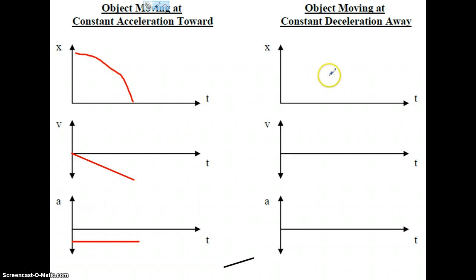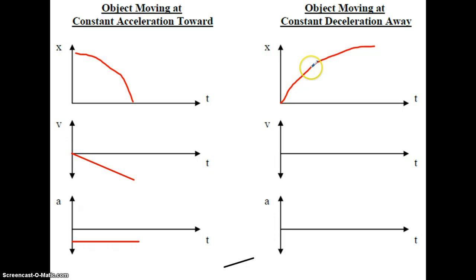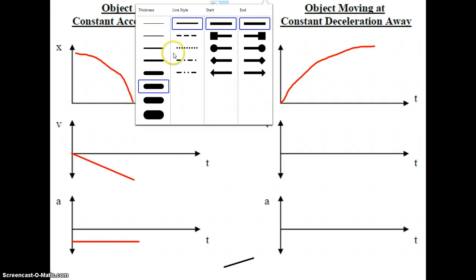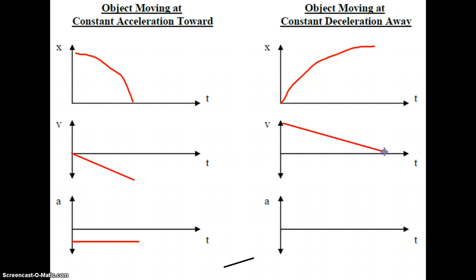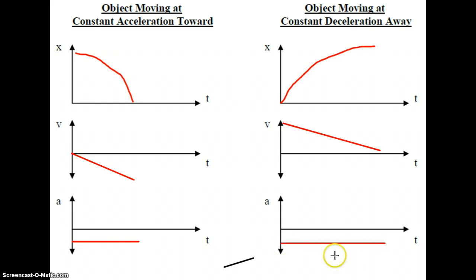Shifting to constant deceleration away: this object is slowing down but the X numbers are getting bigger. This results in a curve where tangent line slopes would be decreasing as the X numbers get bigger. The VT graph shows speed decreasing at a constant rate but we're away from the origin, so the line is above the time axis with a negative slope. So we have a horizontal line of constant acceleration below the time axis. You can clearly see why acceleration-time graphs are so limiting — both of these have the same AT graph but are completely different motions.